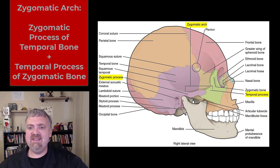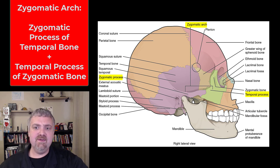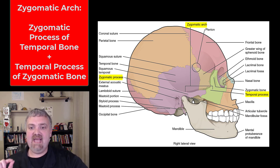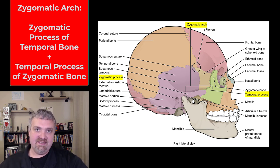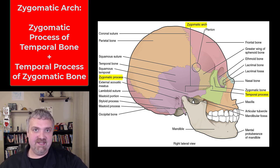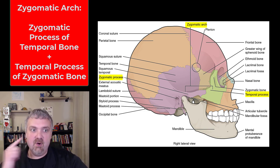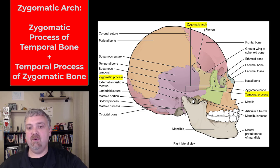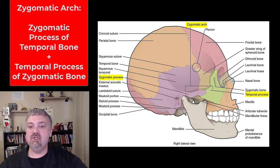Next we have the zygomatic arch, which can be a little confusing. The zygomatic process of the temporal bone fuses with the temporal process of the zygomatic bone — the zygomatic bone being your cheekbone. So that's your zygomatic arch.